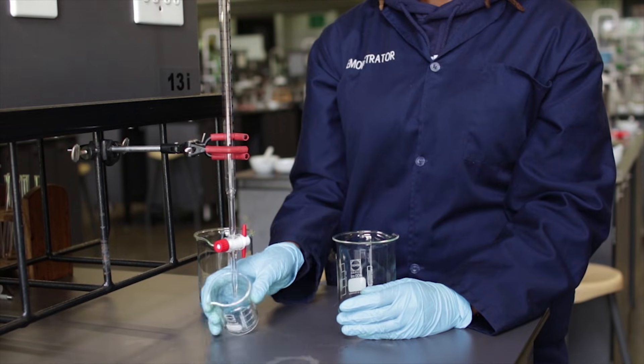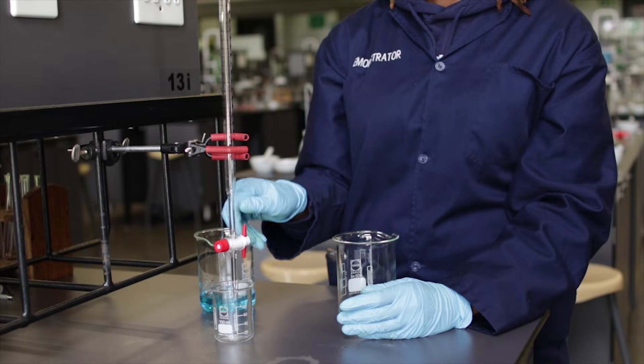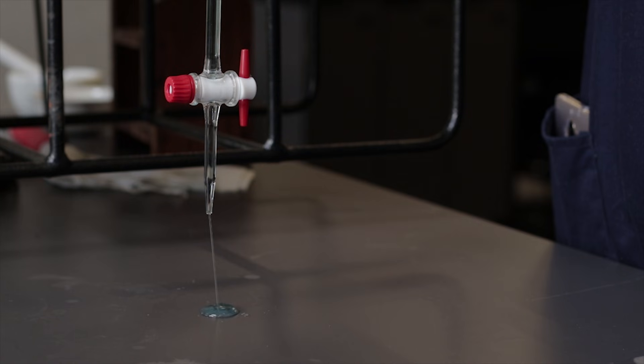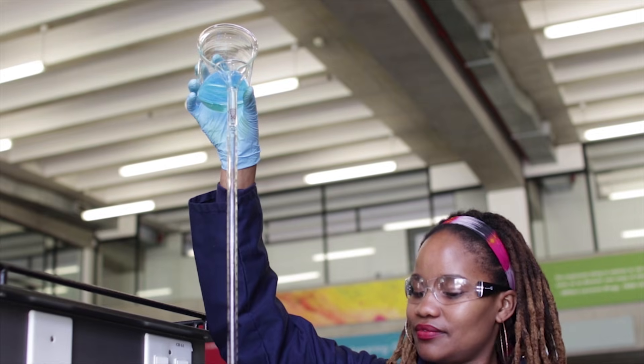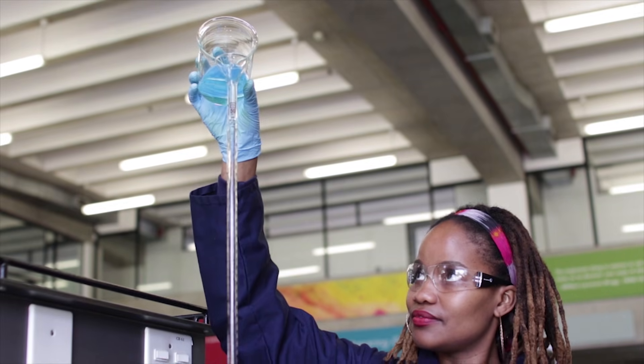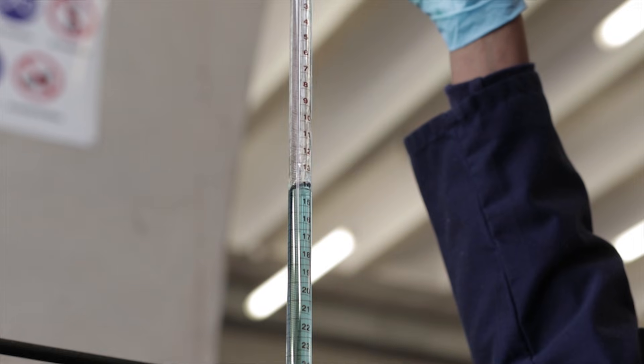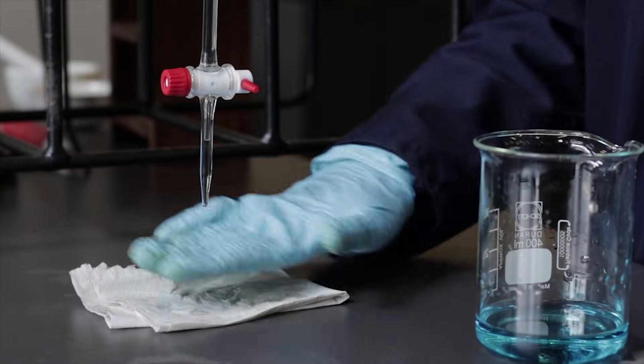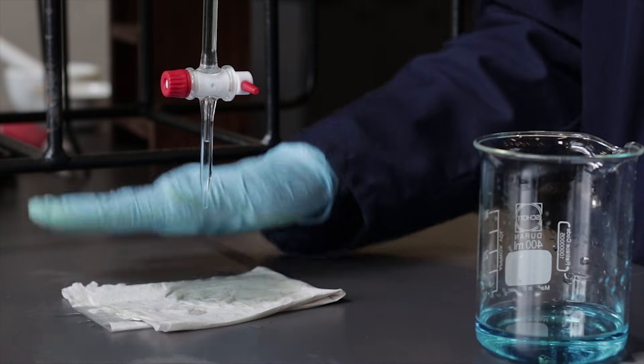We recommend that an empty beaker is placed under the tap of the burette while filling the burette. This is just in case the tap is left open before filling the burette. When filling the burette be careful not to spill the solution on the outside of the burette. If there is a spill the chemicals must be cleaned up as soon as possible with a paper towel.